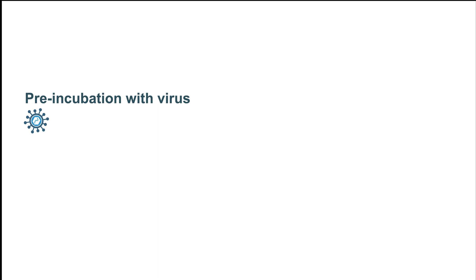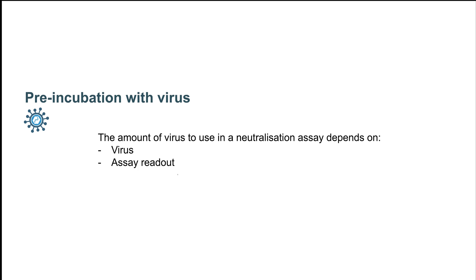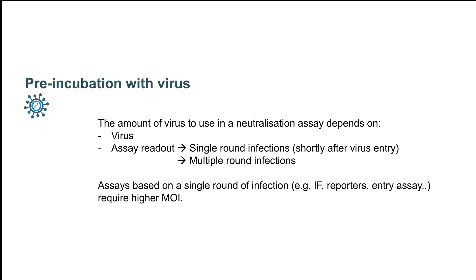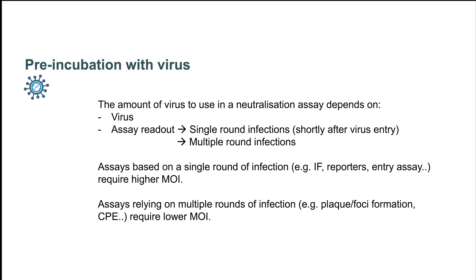Determining the optimal amount of virus to use in a neutralization assay is also critical. The amount of virus depends on the virus itself and on the assay readout, the latter determining whether the assay will be stopped shortly after viral entry in a single-round infection or after multiple rounds of virus replication. Single-round infections are common for certain reporter gene assays or for immunofluorescence assays, where only protein expression by the incoming virus is quantified. Multiple-round infections are common for cell-death-based readouts or whenever multiple rounds of virus propagation are required to detect sufficient signal, for example in a focus reduction assay. Generally speaking, assays relying on a single-round infection require higher amounts of virus, while assays relying on multiple rounds of infection require lower amounts of virus.